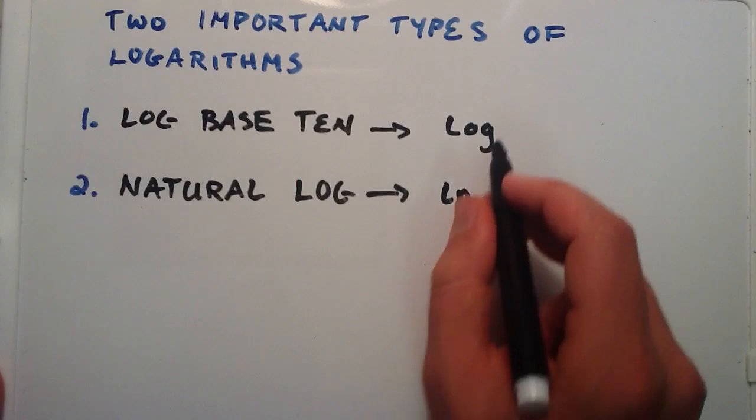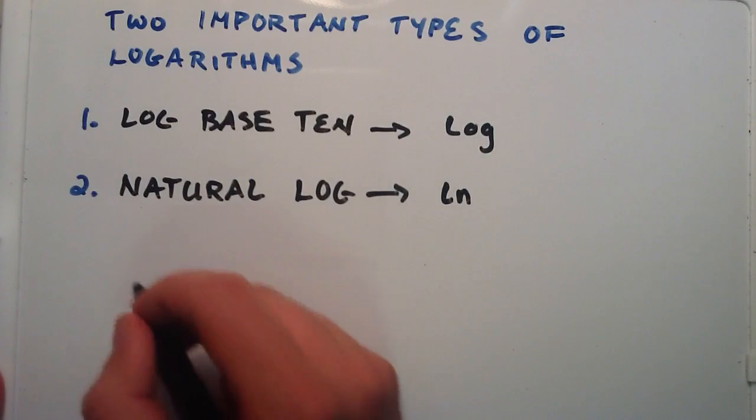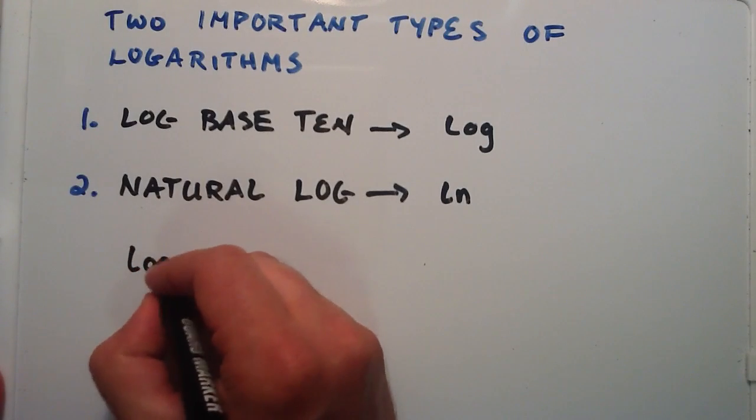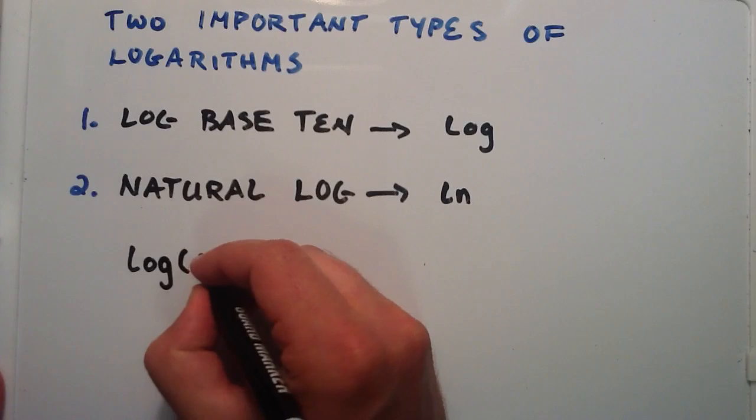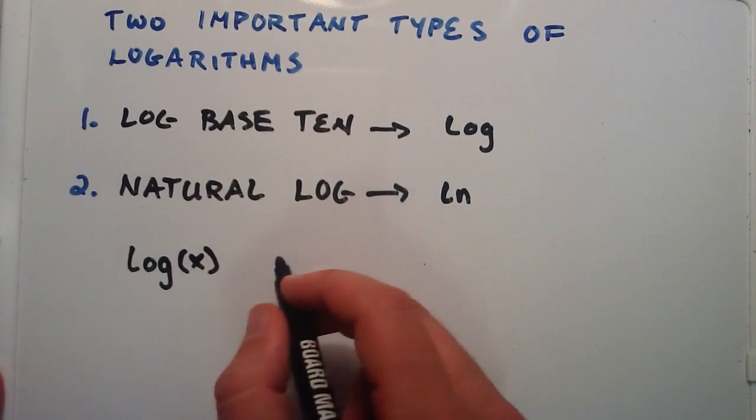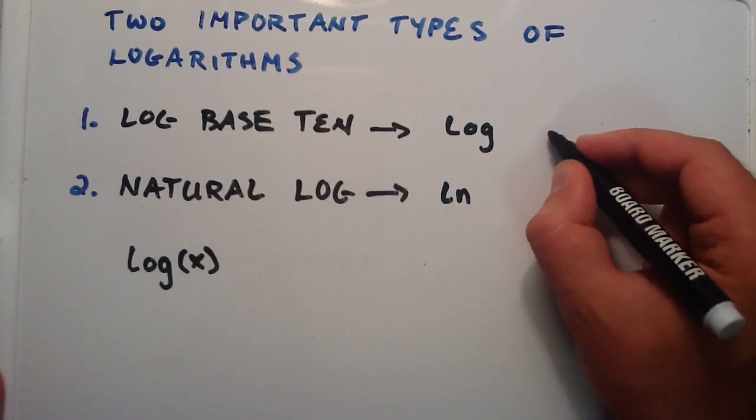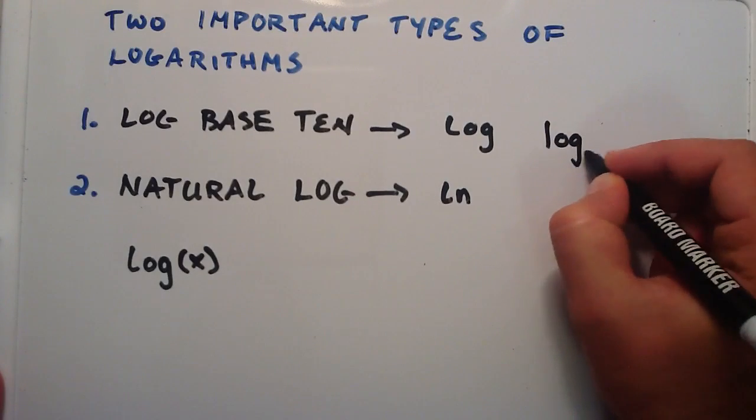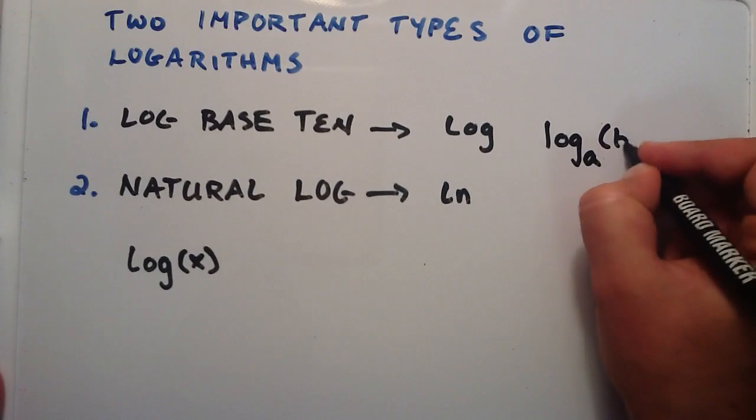So what do these two things mean? Well, any time you have a logarithm, and we'll just say it's a log with an argument x, there's no base specified here. Because normally, when we have a logarithm, it's written in this form, log base a of b.